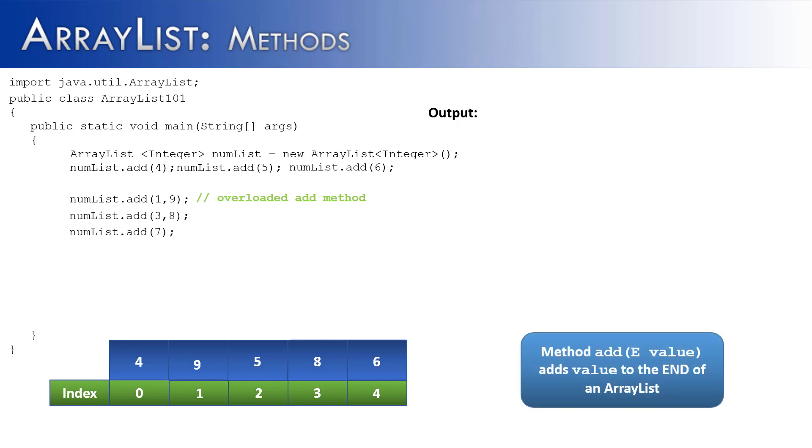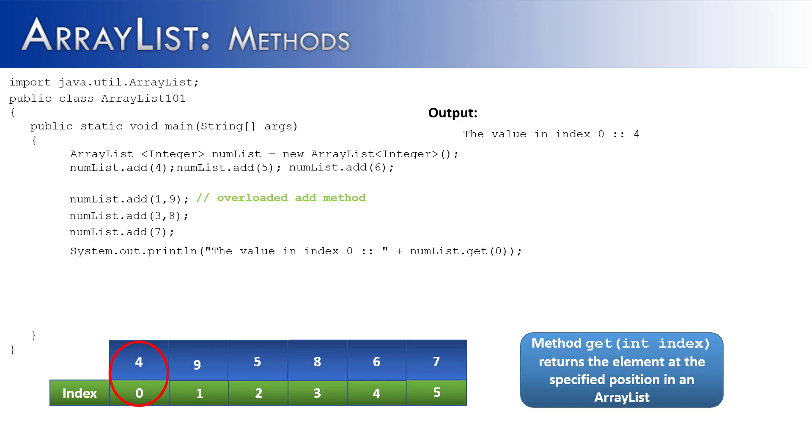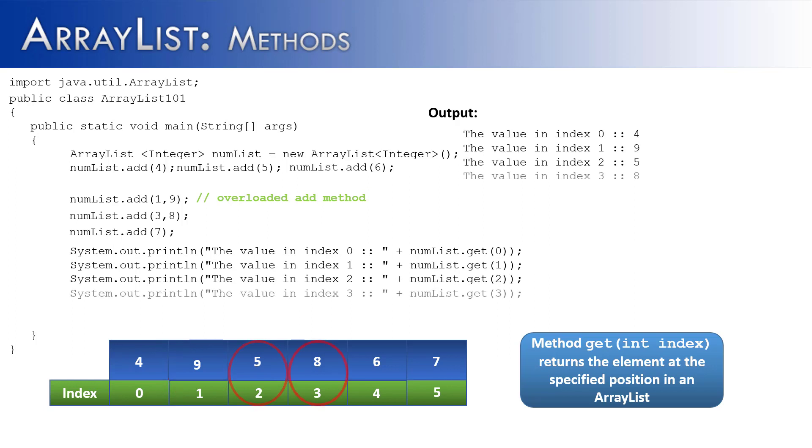And if we wanted to, we could still use the other add method, which is just going to add at the end of the ArrayList, and so this would add 7 to the end of the ArrayList. So now if we were to get the values inside of the ArrayList using the get method, it would be 4, 9, 5, 8, 6, and 7.